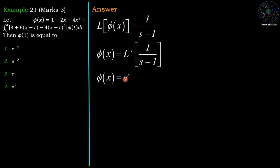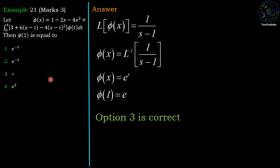Taking the inverse Laplace on both sides, phi(x) = e^x. This is the solution of the integral equation. To find phi(1), put x = 1: phi(1) = e^1 = e, which is option number 3. So option number 3 is the correct answer.